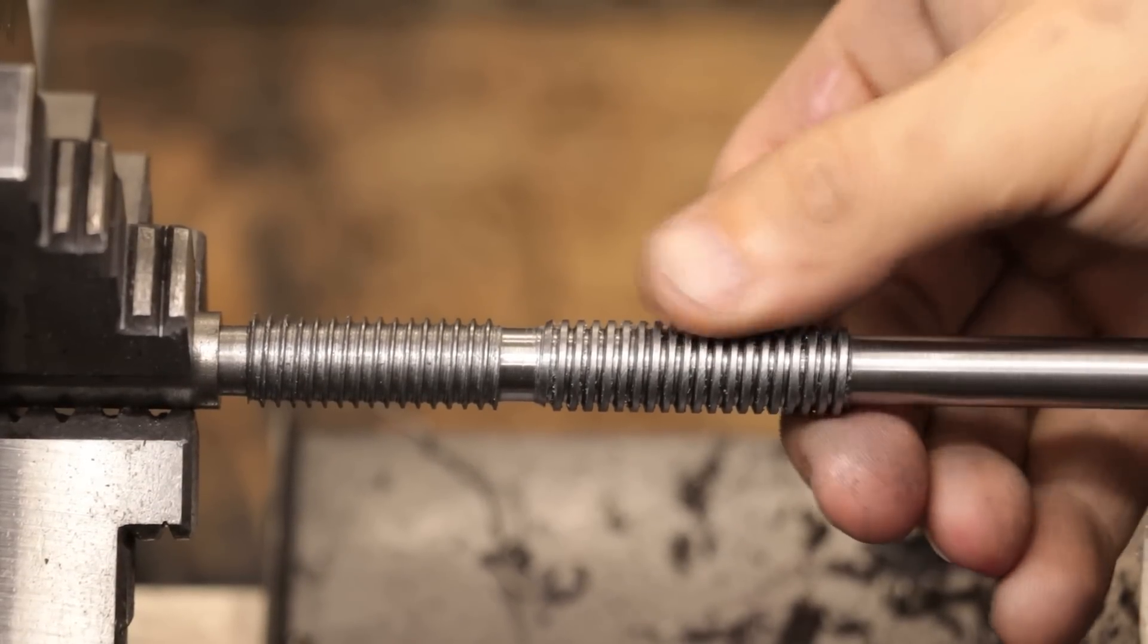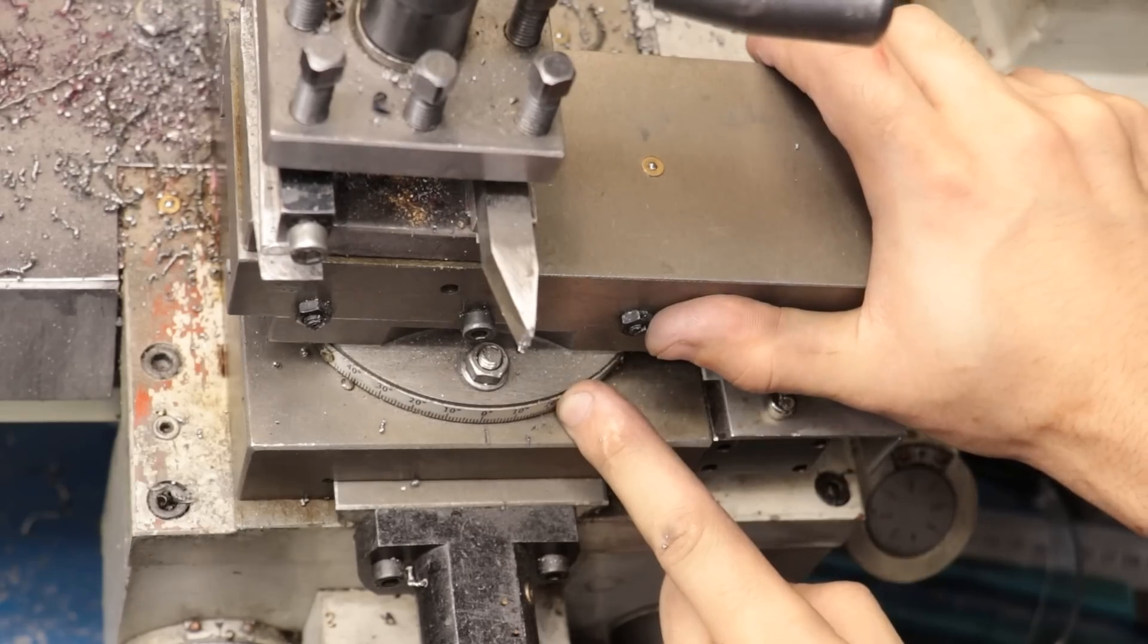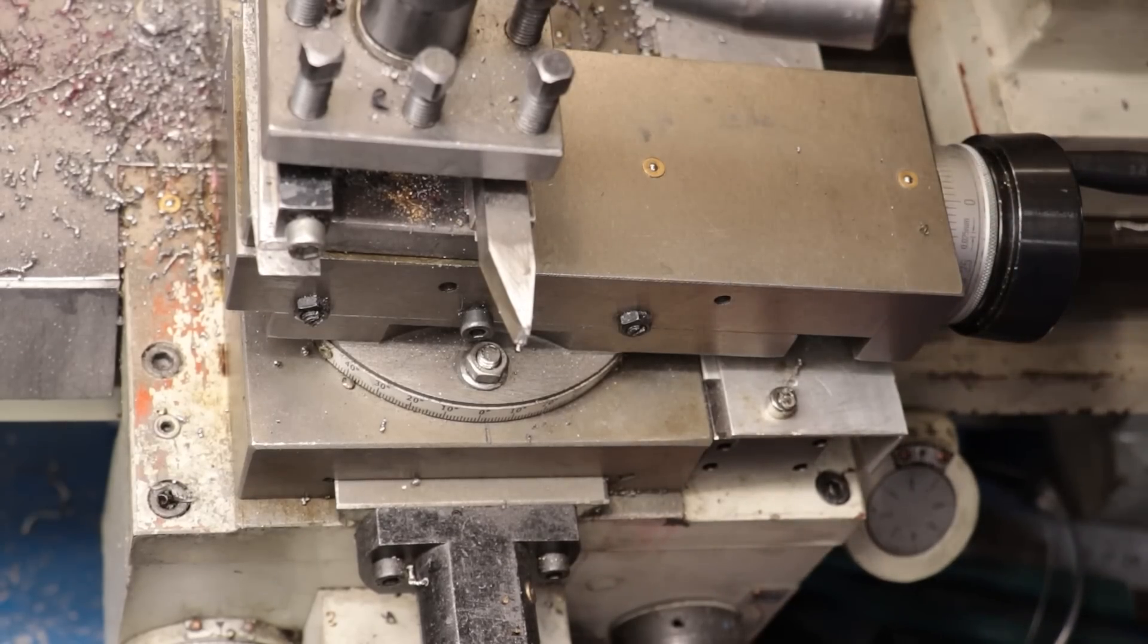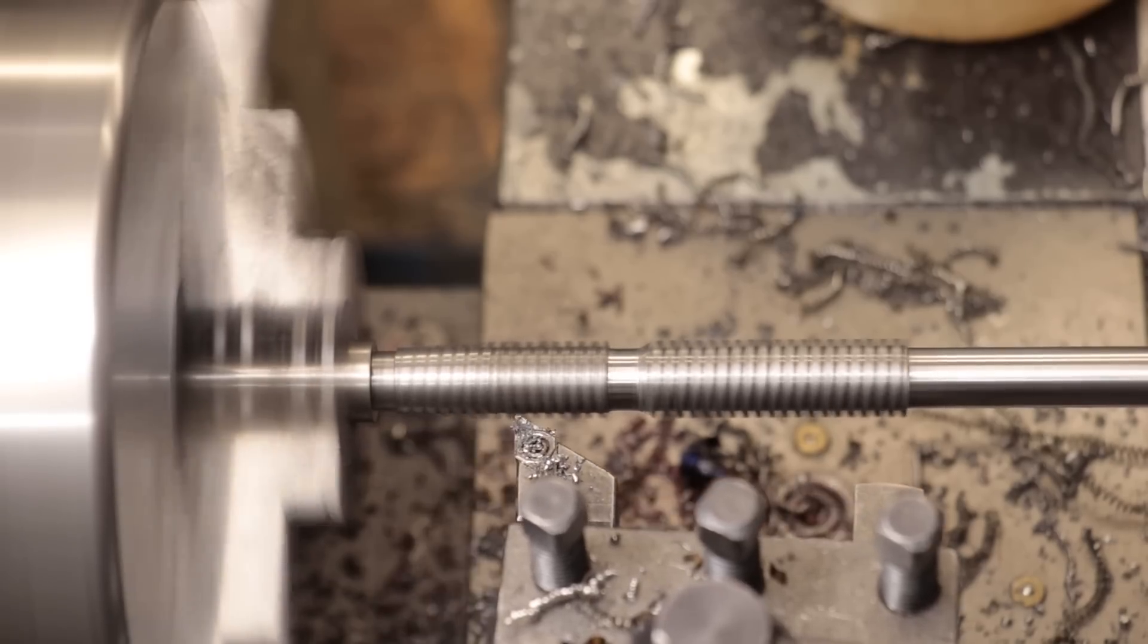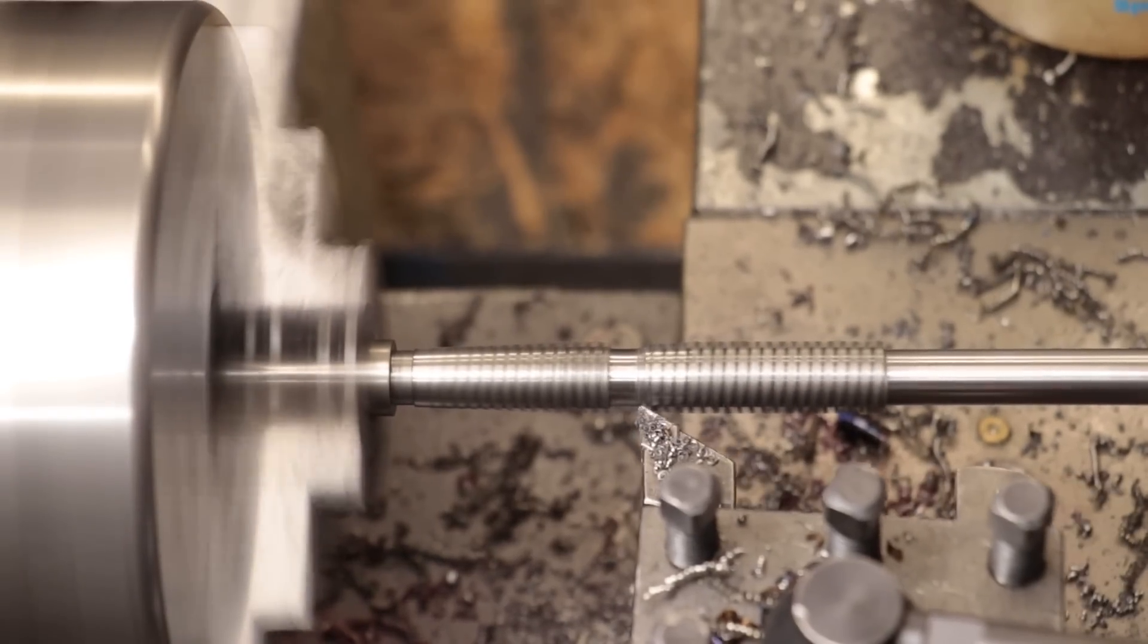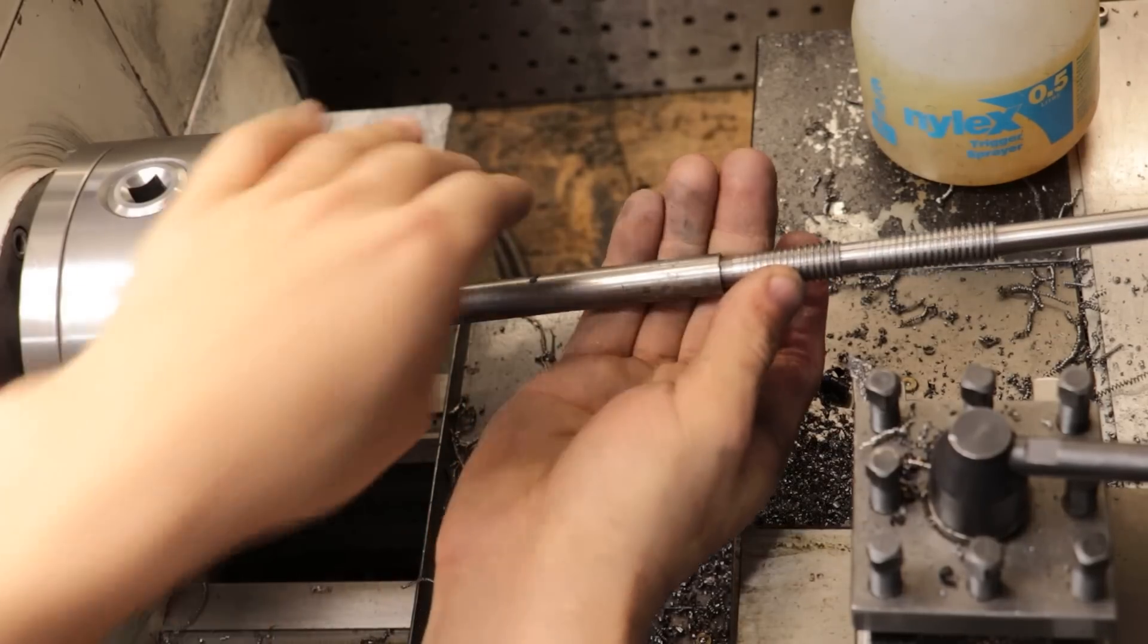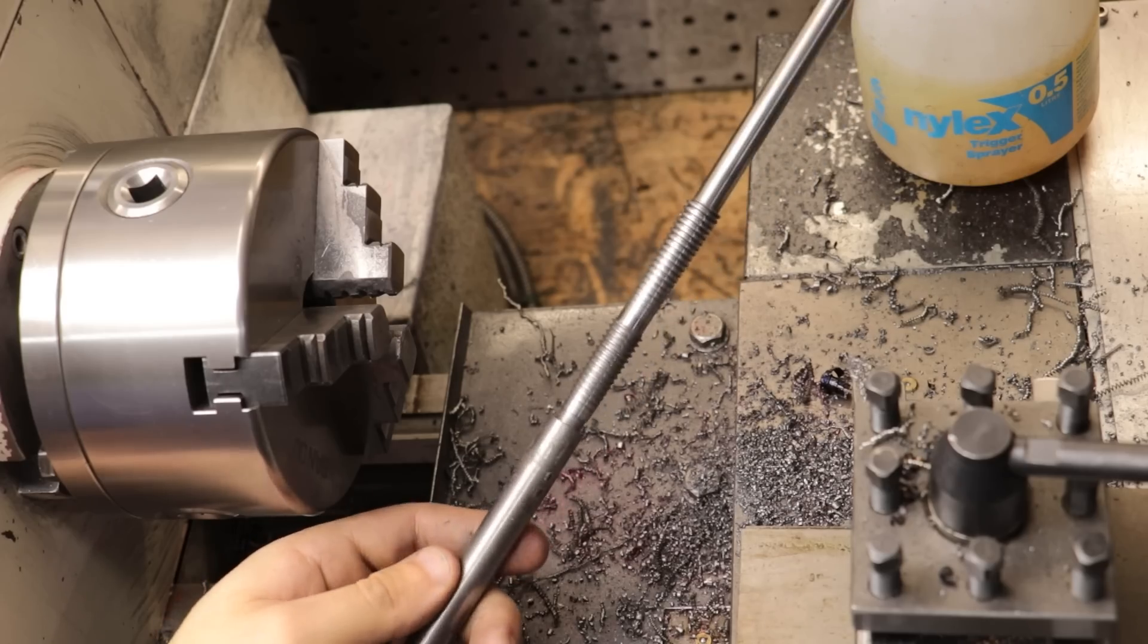All right, and that took a bit longer than I thought it would, but that looks to be pretty close to what I was aiming for. The last thing to do is to turn down a four-degree taper onto the threads, and this should further reduce the cutting load, and it should help the tap cut straight. All right, that's looking pretty good. So before I part it off, I'll get it in the milling machine and get the flutes cut.